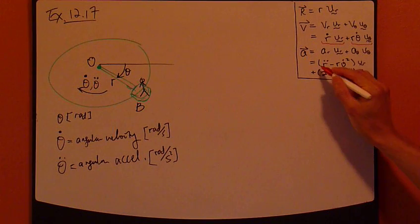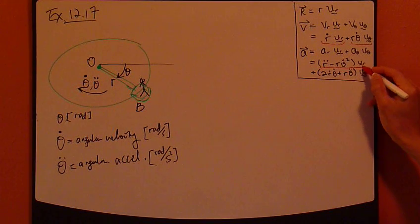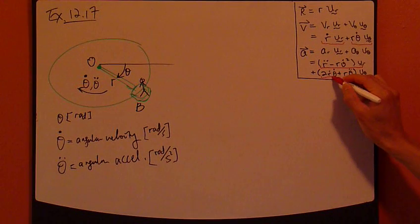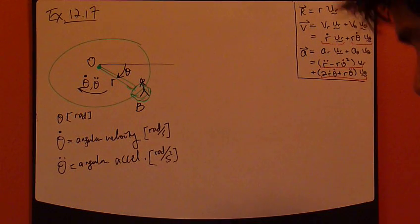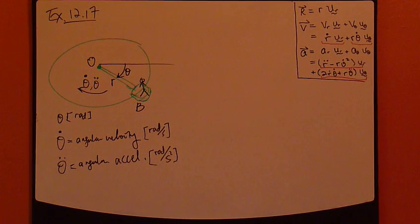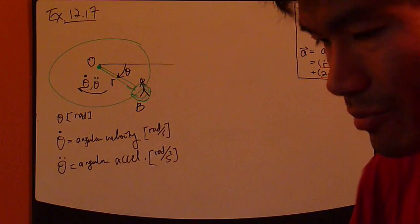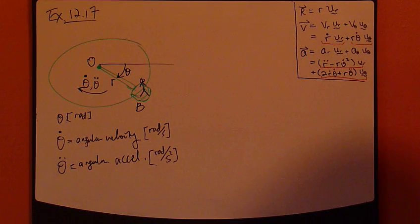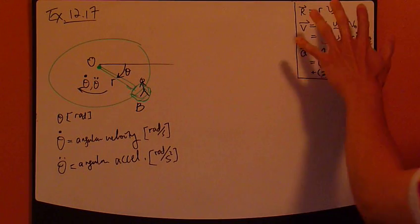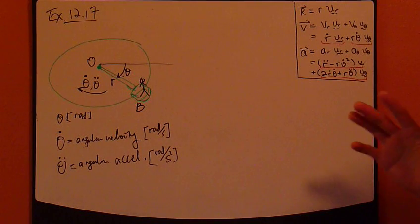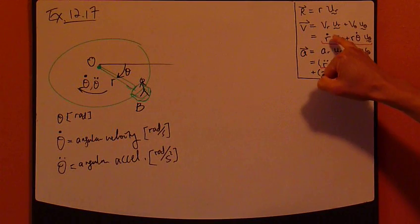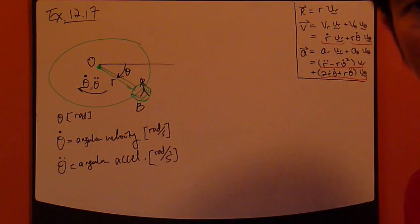The radial component and then the angular theta component. So, you have to find all of these. So, you know, this example just really illustrates how easy and straightforward this radial transverse coordinate system is. Because, just look at the definition. I mean, this seems like a lot to handle, but all you have to do is just check time derivative. That's all.